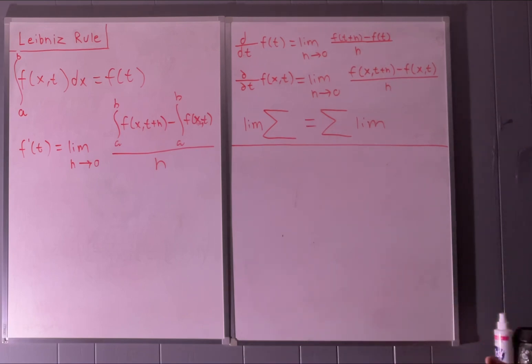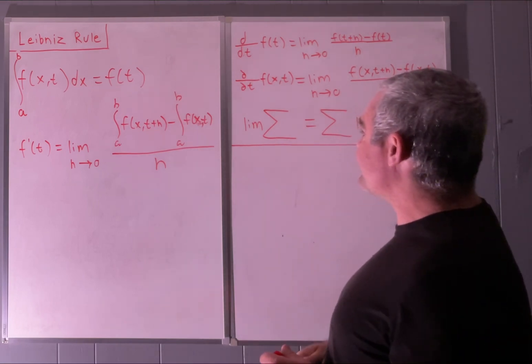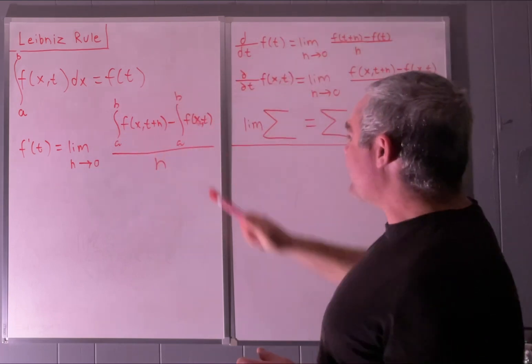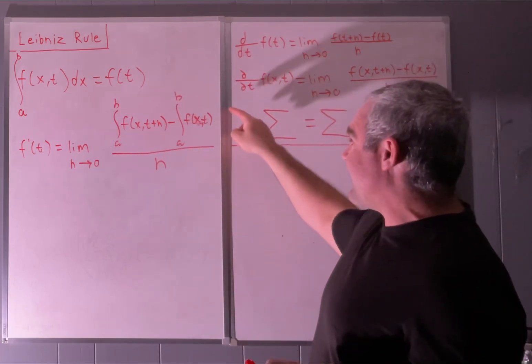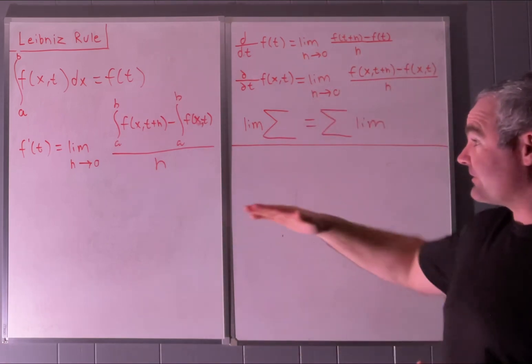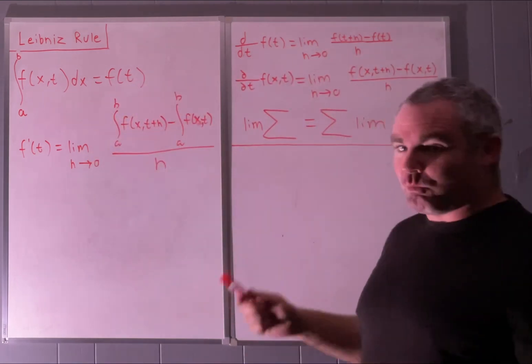What next? What we're going to do is use the linearity of integrals to bring these together, and also the fact that with respect to x, which is what we're integrating with respect to, h is a constant, and we're just going to bring it... Basically, we could put this outside as a 1 over h.